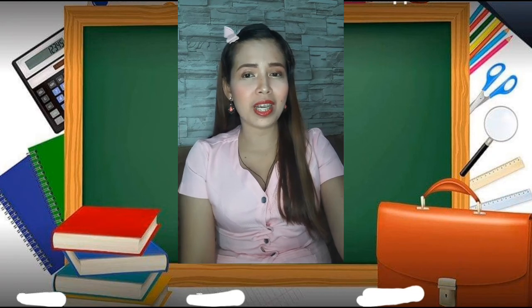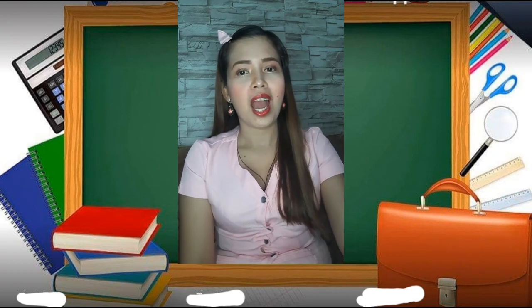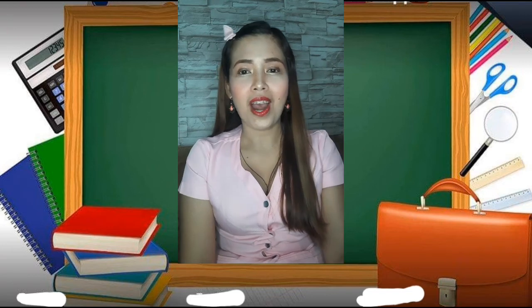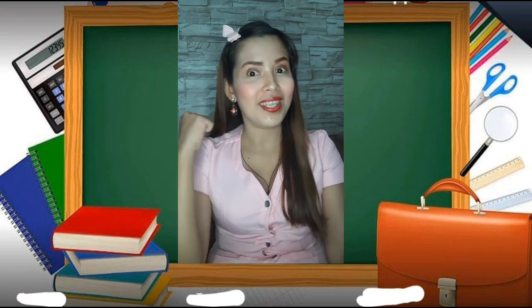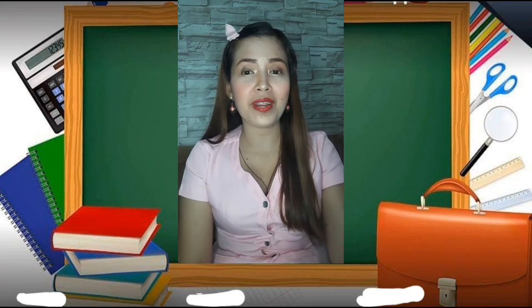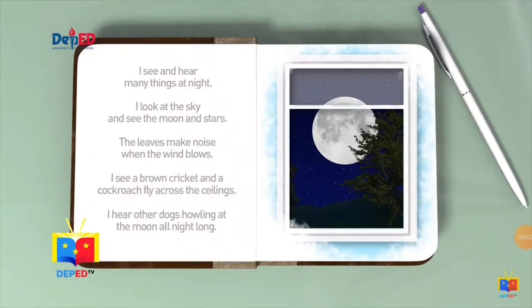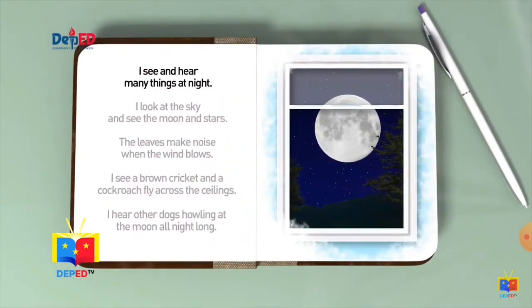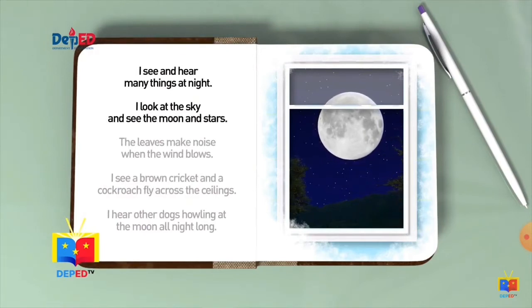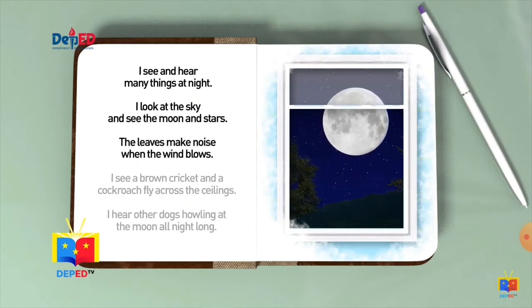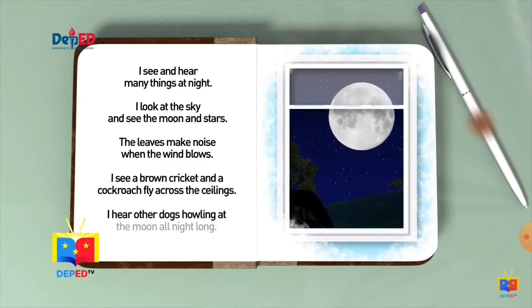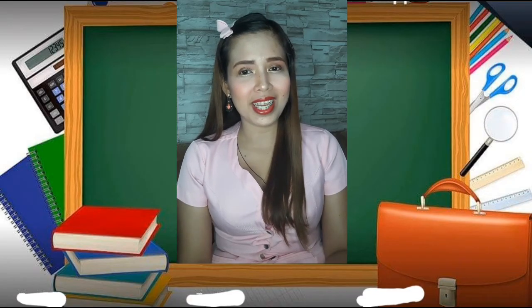Now learners, let's find out if you understood the lesson. I want you to do this task — are you ready with your pen and paper? Read the story and write your answers on your paper. Blackie's story: I see and hear many things at night. I look at the sky and see the moon and stars. The leaves make noise when the wind blows. I see a brown cricket and a cockroach fly across the ceiling. I hear other dogs howling at the moon all night long.